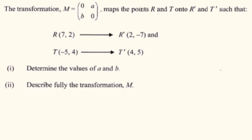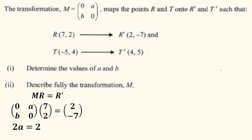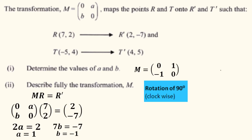In closing, let's look at this exam question. The matrix M maps T to T image, meaning M times T equals T image. Let's expand the first equation. The matrix M is (0, A, B, 0), times R, which is (7, 2), is equal to (2, -7). Multiplying the top row by (7, 2), we get 0 times 7 plus A times 2 equals -7. Multiplying the bottom row, we get B times 7 plus 0 times 2. Solving, we get A equals 1 and B equals -1. If we expand the second equation, we'll get the same solution.